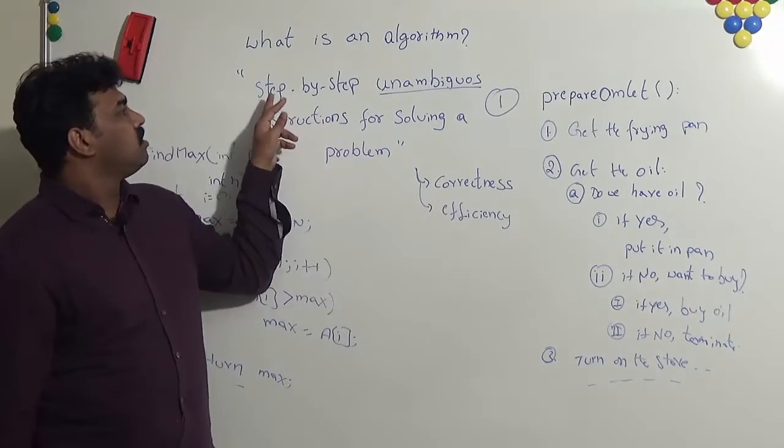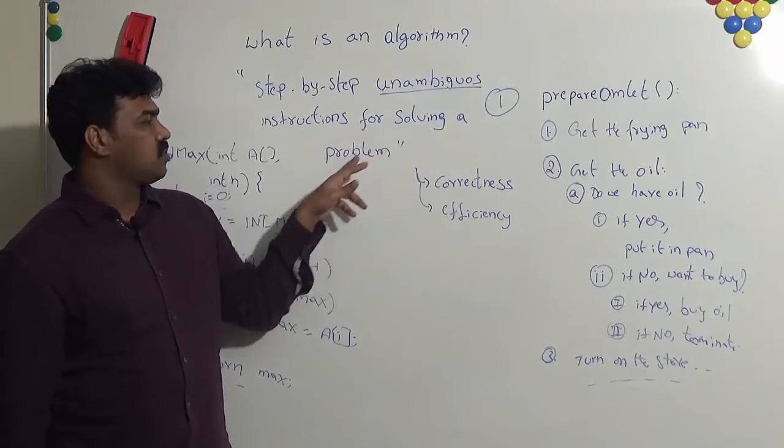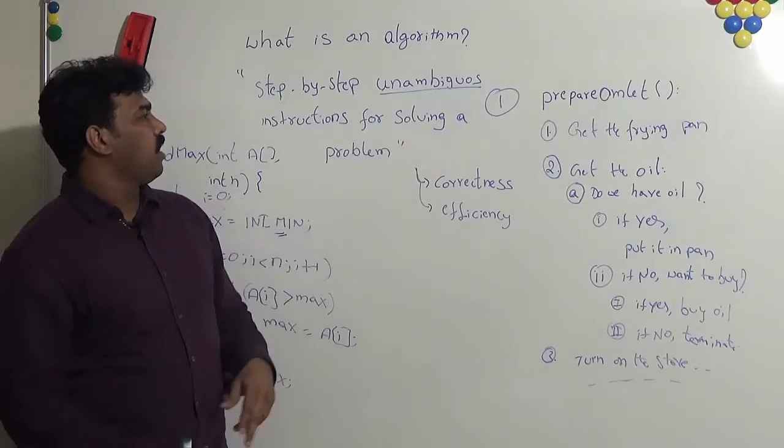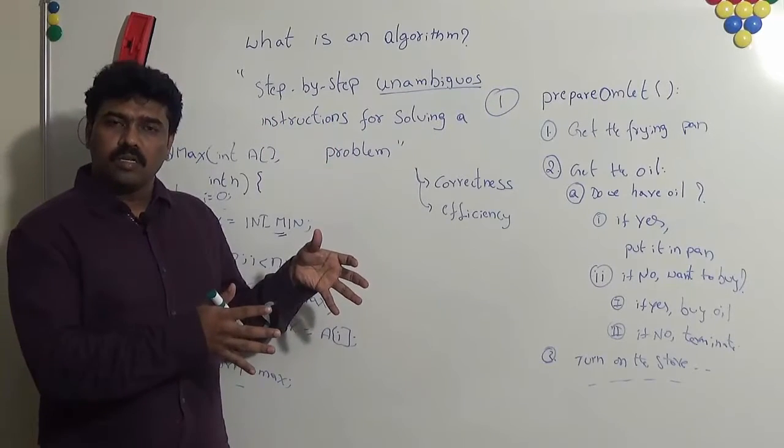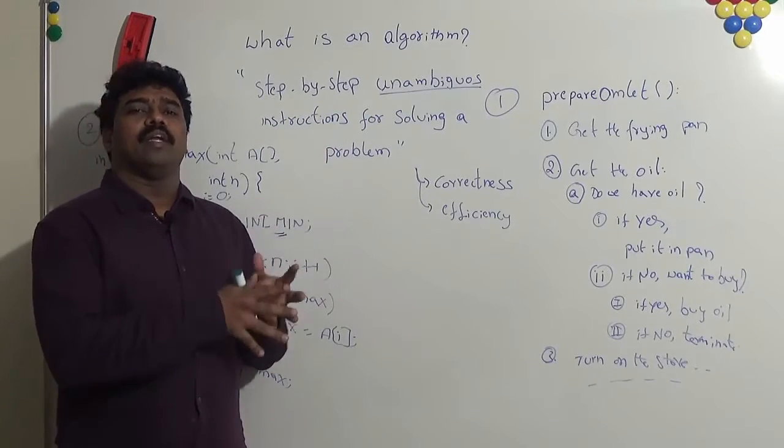As the definition says, this is a step-by-step unambiguous instructions for solving a problem. The word unambiguous means if you follow these instructions, there should not be any ambiguity in getting the solution.